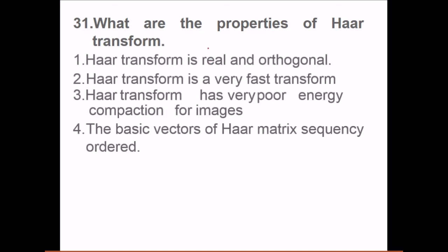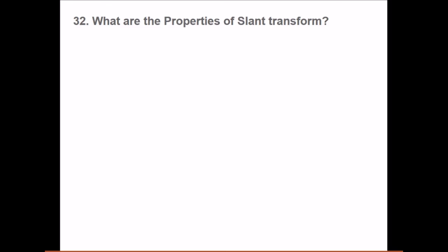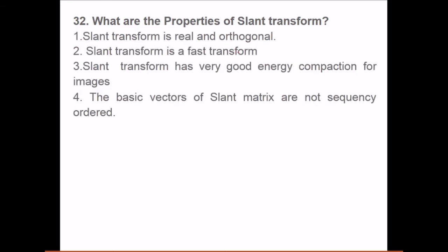What are the properties of Slant transform? Slant transform is real and orthogonal. Very fast transform. Energy compaction is not very good and the basic vectors of Haar metric sequency are ordered. What are the properties of slant transform? This is real and orthogonal. Fast transform. Slant transform has very good energy compaction for images. And basic vectors of slant matrices are not sequentially ordered.